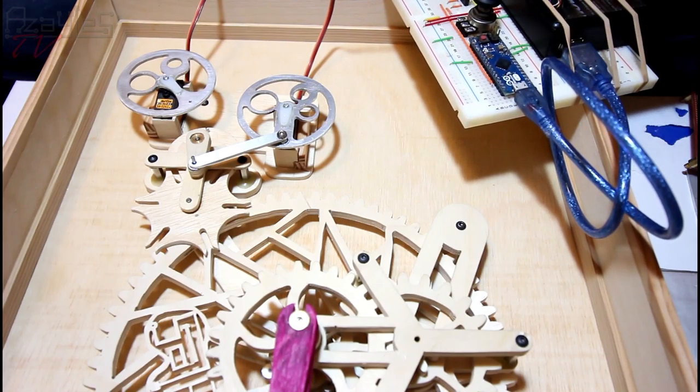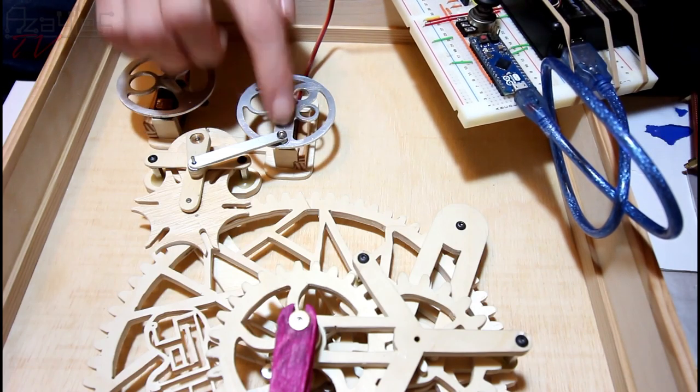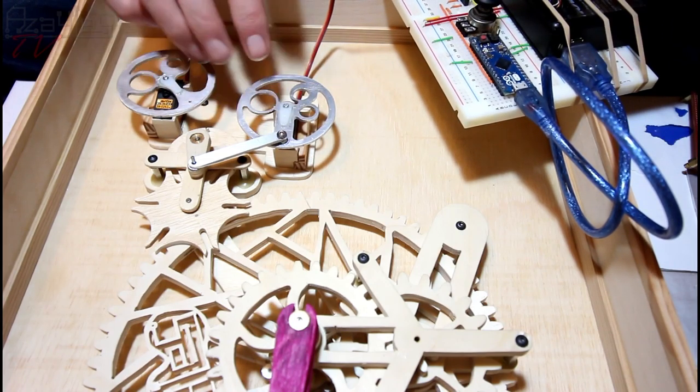So next job will be programming in the lookup table for the discrete steps required to move this round the half circle. But that'll be next week.